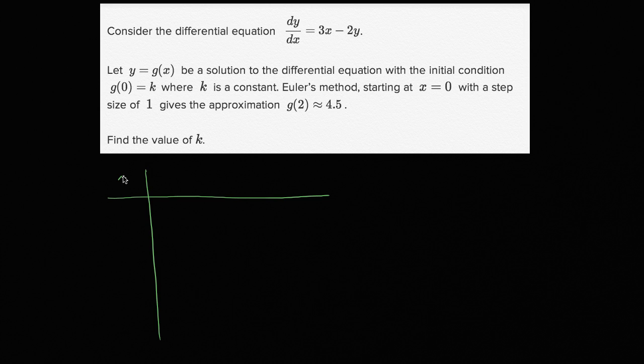So let's make this column x. I'm gonna give myself some space for y. I might do some calculation here. y and then dy/dx. Now, we can start at our initial condition. When x equals 0, y equals k.